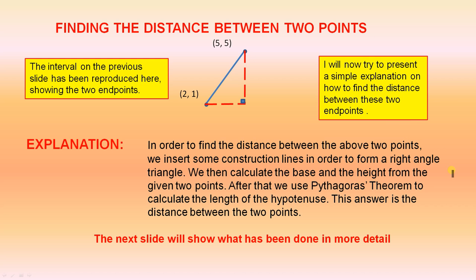Explanation. In order to find the distance between the above two points, we insert some construction lines in order to form a right-angled triangle.